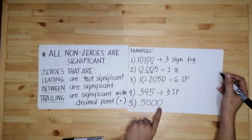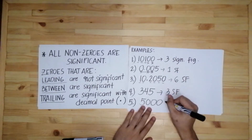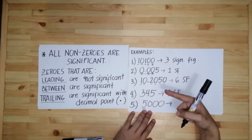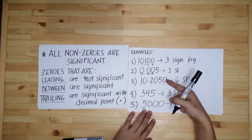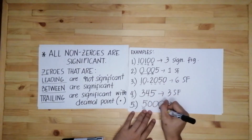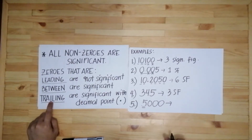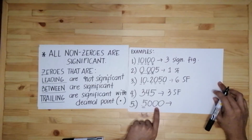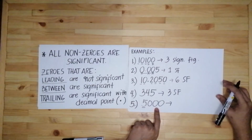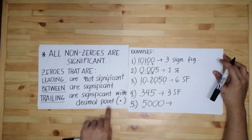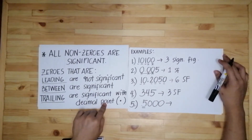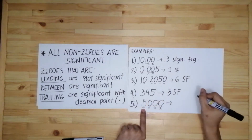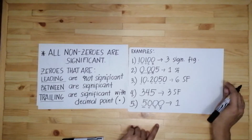Number five, we have 5000 — five thousand. We have one non-zero number which is already considered a significant figure. Then we have three trailing zeros at the end. Trailing zeros are significant only when there is a decimal point. Since there is no decimal point here, you will not consider them as significant. So there is only one significant figure.